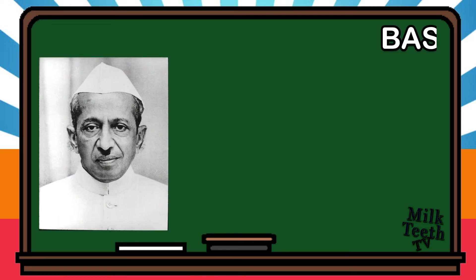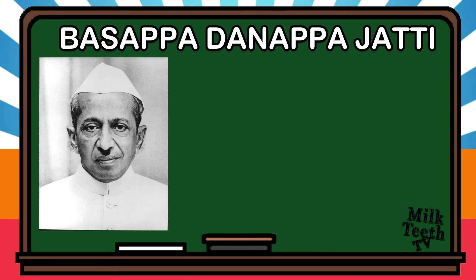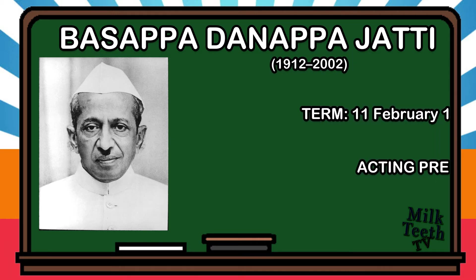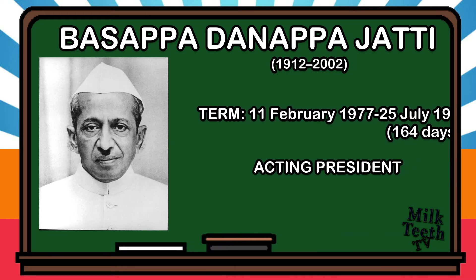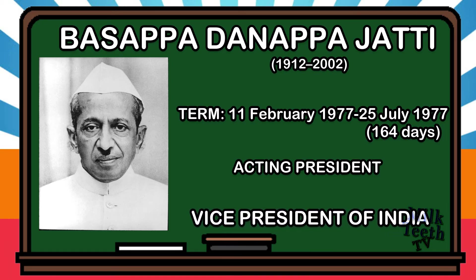Basappa Danappa Jatti — Third Acting President of India. Born in 1912, he became the acting president on 11th February 1977 and served till 25th July 1977, for a period of 164 days. He was the Vice President of India.